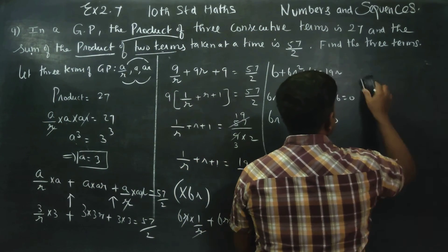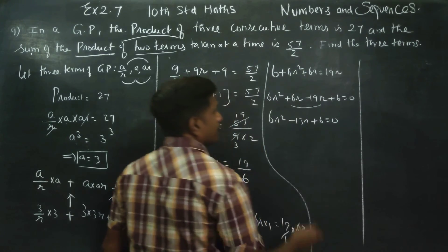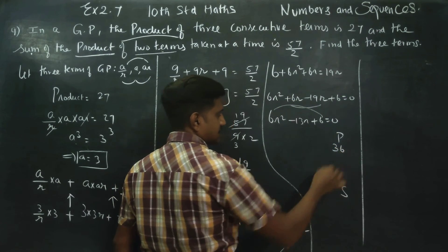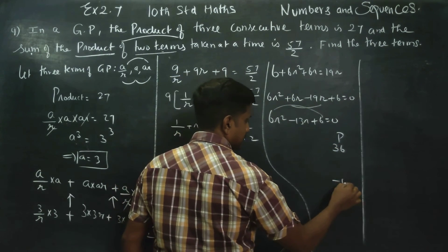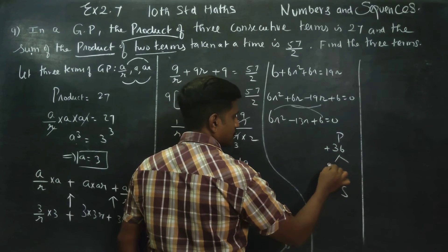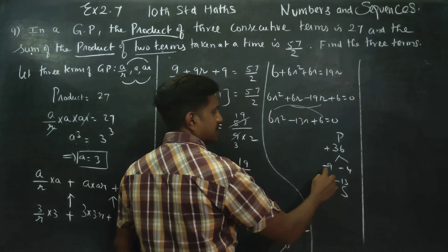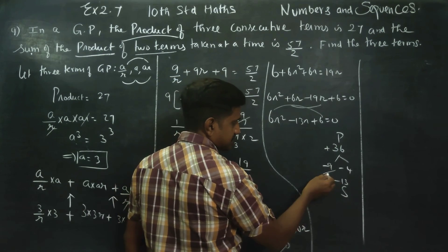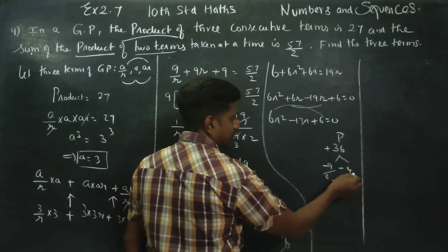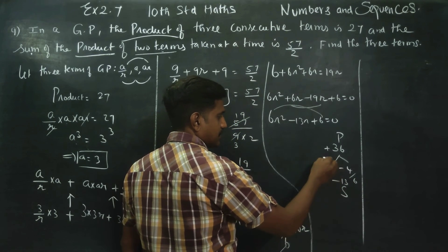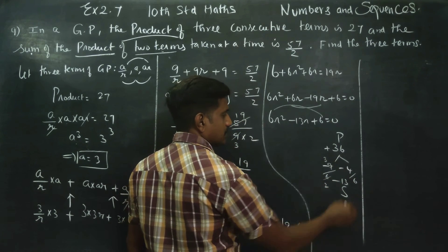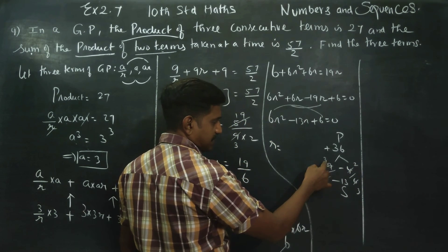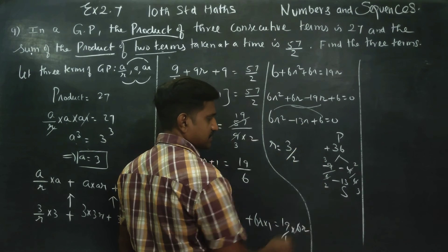Using the product-sum method to factor 6R square minus 13R plus 6 equals 0. Product is 36, sum is minus 13. The factors are minus 9 and minus 4. So R equals 3 by 2 or R equals 2 by 3.